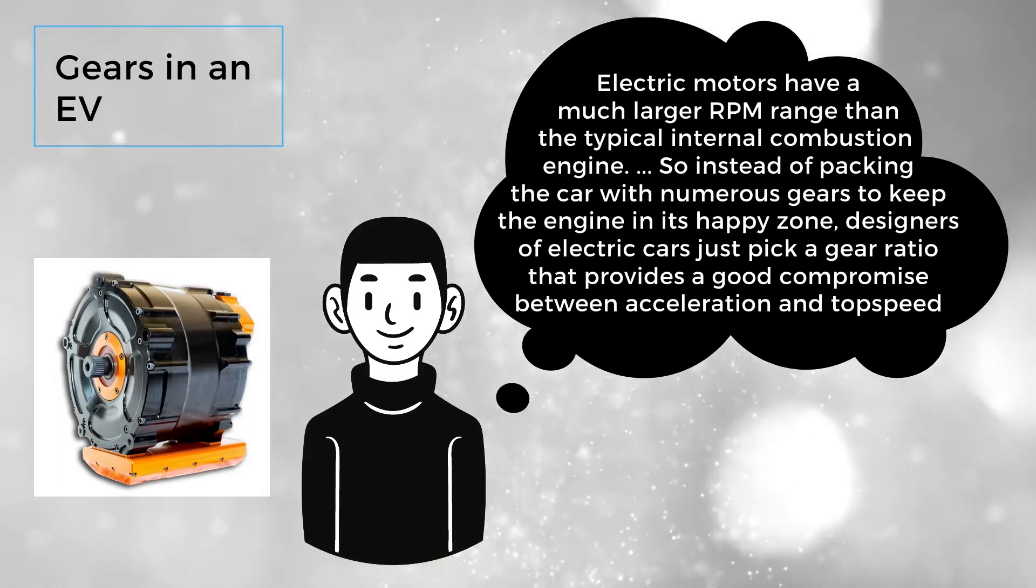Electric motors have a much larger RPM range than the typical internal combustion engine. So instead of packing the car with numerous gears to keep the engine in its happy zone, designers of electric cars just pick a gear ratio that provides a good compromise between acceleration and top speed.